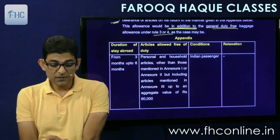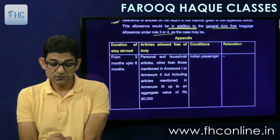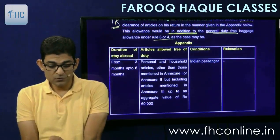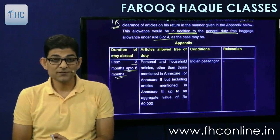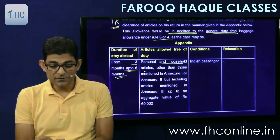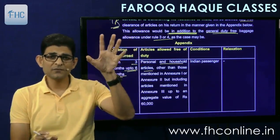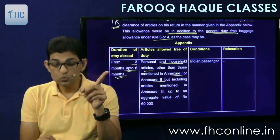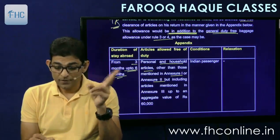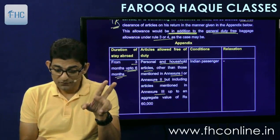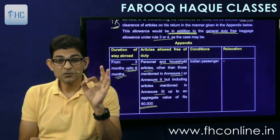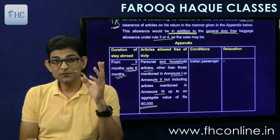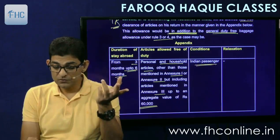If your duration of stay abroad is 3 months to 6 months, you can bring personal and household articles other than Annexure 1 and 2, but Annexure 3 articles can be brought, up to an aggregate value of 60,000 rupees. Apart from the general allowance of 50,000, the total exemption will become 1,10,000 rupees. This is available to Indian passengers holding Indian passports.